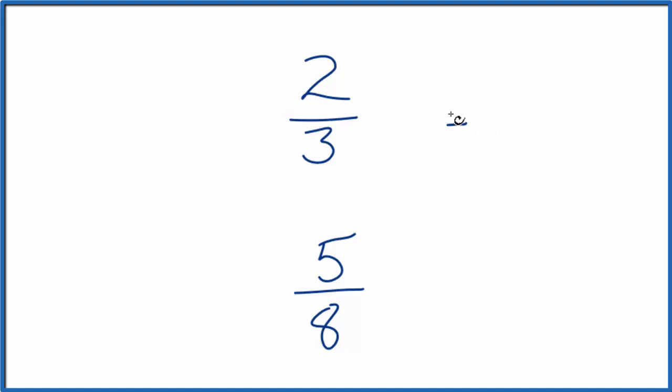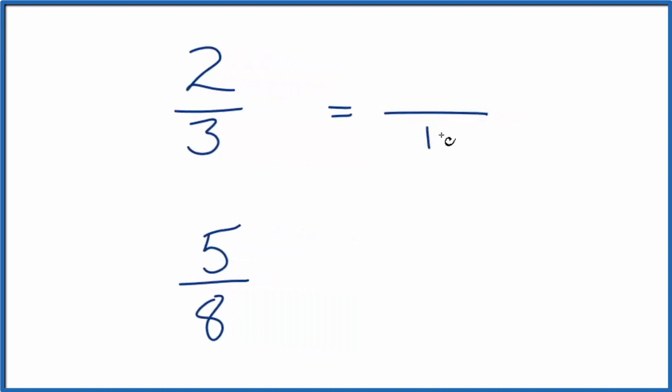First, we could look at the denominator, get a common denominator for both fractions. So this number here, the denominator, would be the same. And then the numerator, we could just compare the numerators. Whichever one's larger is the larger fraction.